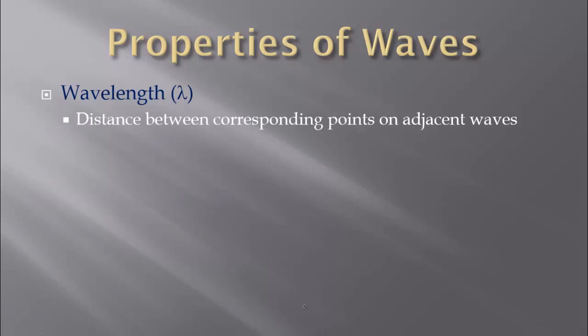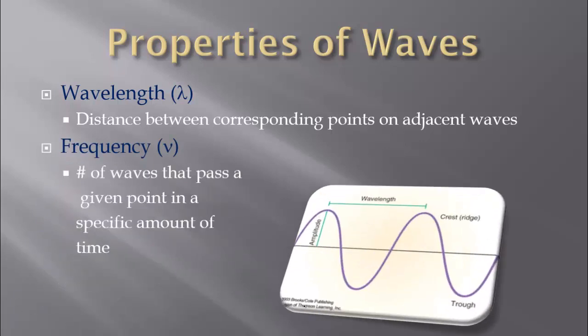So let's look at properties of waves. The first one we are going to look at is wavelength. The symbol is lambda — it is a Greek symbol that helps keep variables separate in equations. This is the distance between corresponding points on adjacent waves. Next we have frequency, symbolized by nu. Frequency is the number of waves that pass a given point in a specific amount of time, usually one second.